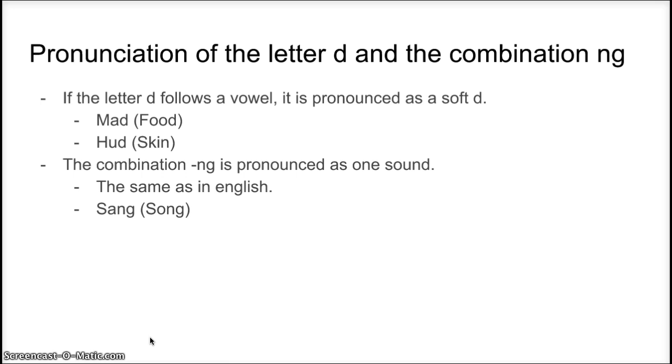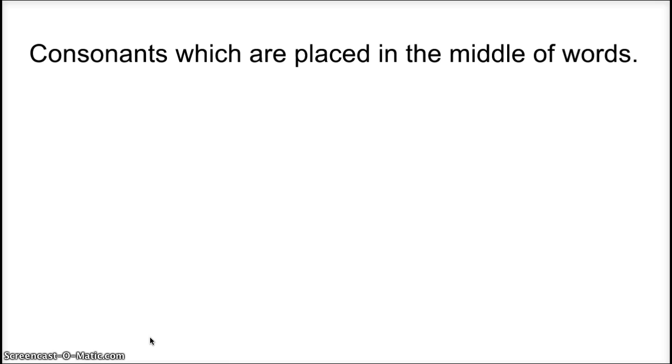The third rule is what happens with some consonants when they are placed in the middle of words. And this rule relates to the letters P, T, and K. If P is placed in the middle of the word, it is pronounced as a B.